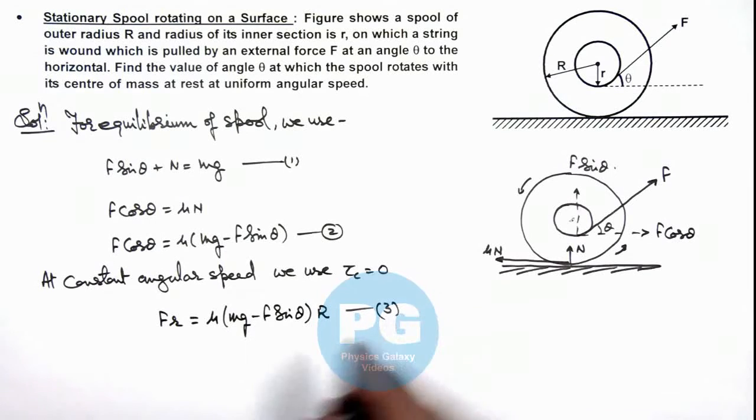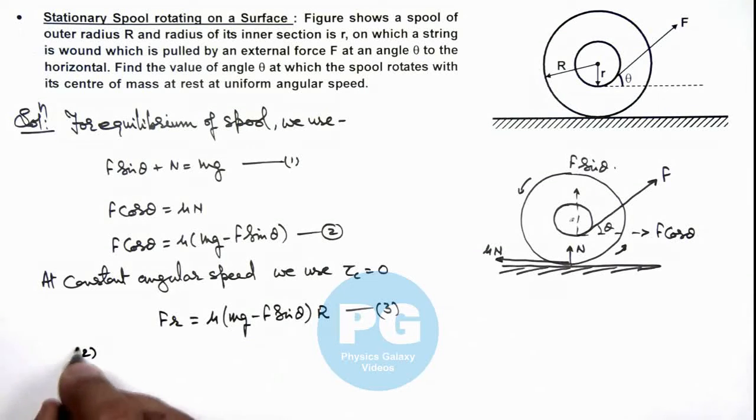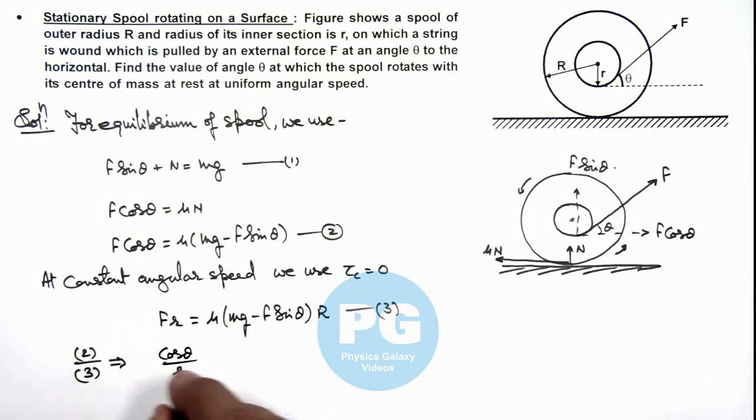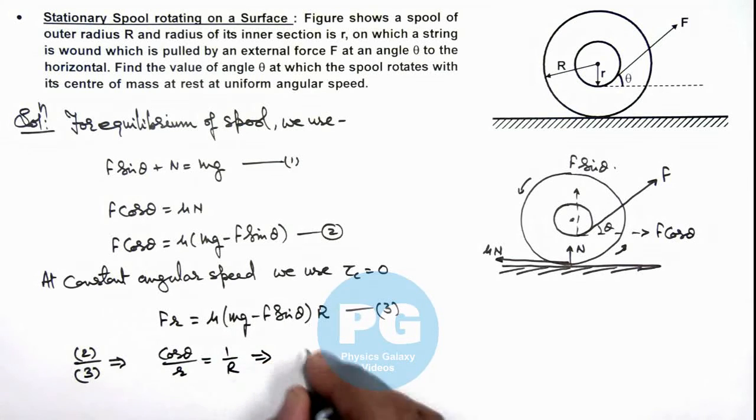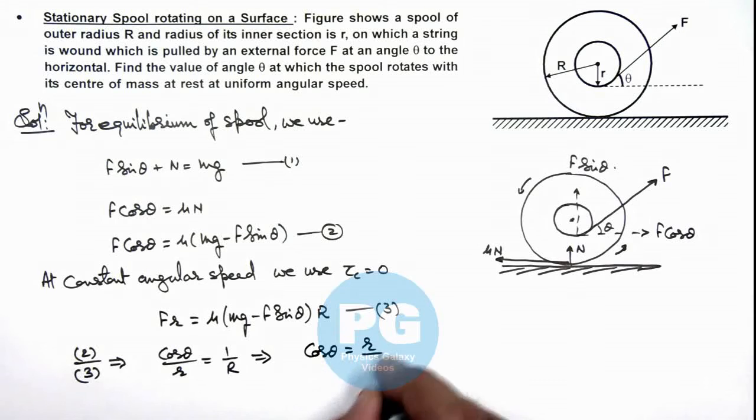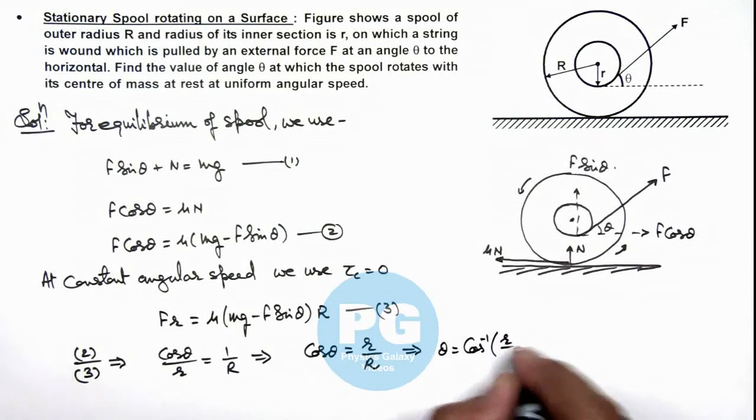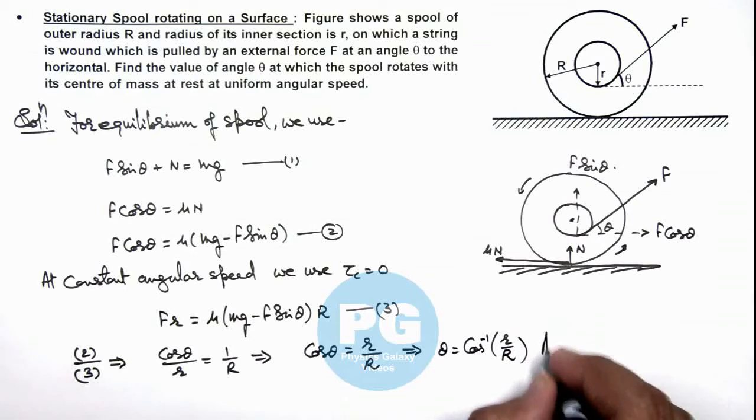Now in this situation directly from 2 and 3 equation here we can see if we divide the 2 equations. This gives us, here F gets cancelled out we are getting cos theta by r is equal to 1 by R, which is giving us the value of cos theta is equal to r by R. And it gives us the value of theta which is cos inverse of r by R. That is the result of this problem.